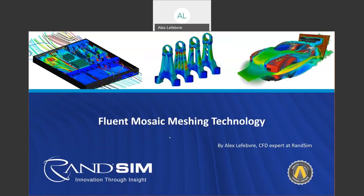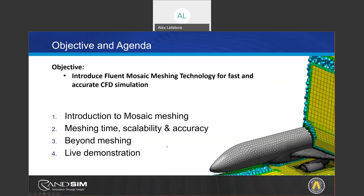Good afternoon and thank you for joining us. We're going to talk about FRIANT mosaic meshing technology. This is a relatively late development where ANSYS went about to create a new mesher. The mosaic technology is part of this new mesher and this is a FRIANT-only technology. Using mosaic meshing you will be able to generate faster and more accurate CFD simulations, and this is what we will try to demonstrate in four different points.